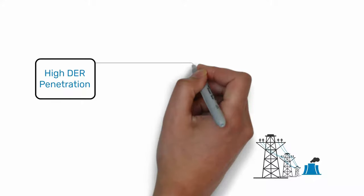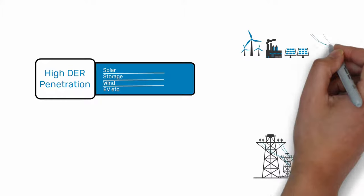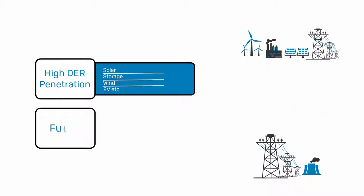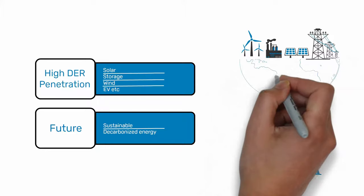Distributed energy resource integration with utility systems. Deployments of distributed energy resources (DER) such as solar plants, battery storage systems, electric vehicles, and wind farms are progressing at a record pace. Distributed energy resources can interlace with the main grid gracefully, which helps prosumers to sell excess power while drawing from the main grid as needed. These advances are intended to support a more sustainable, decarbonized energy future.